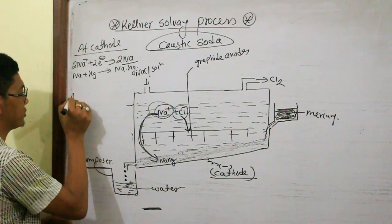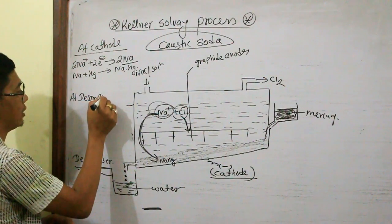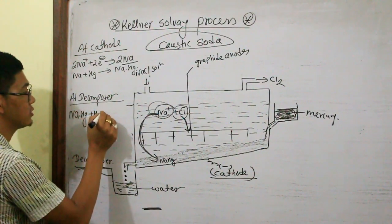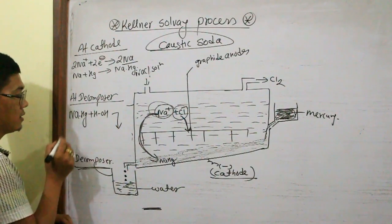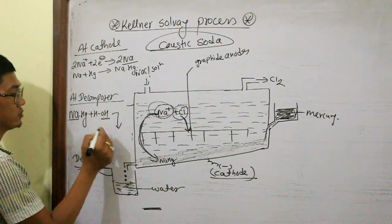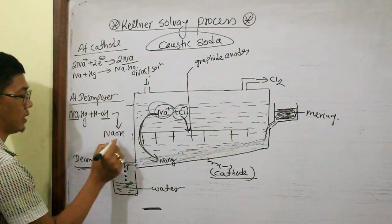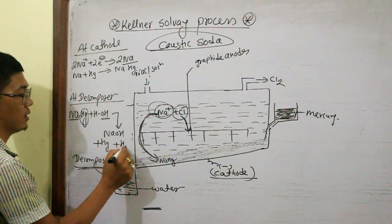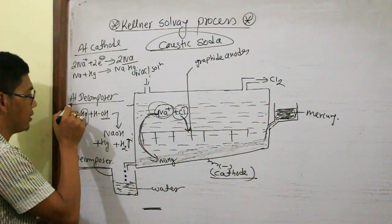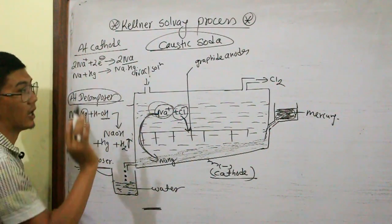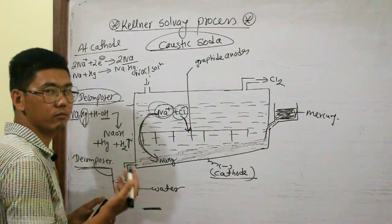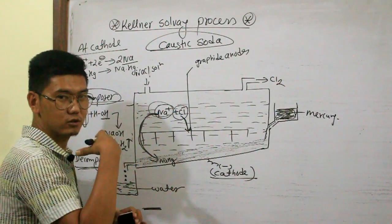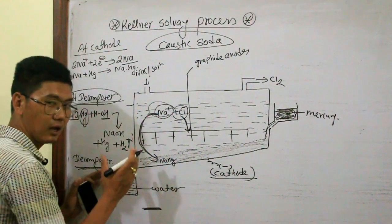This is the sodium amalgam reaction. Sodium amalgam falls into water and drops into the decomposer. At the decomposer, sodium amalgam reacts with water. NaOH is formed — Na+ and OH- combine to give NaOH. The remaining mercury is recovered as it is. Hydrogen gas is also produced. This is the decomposer reaction.